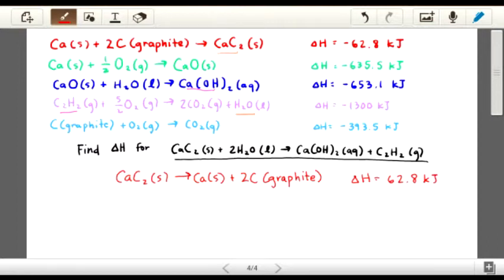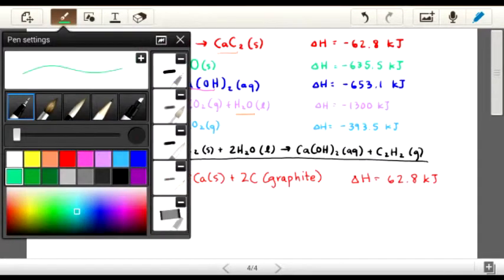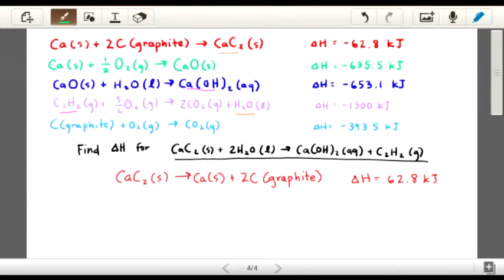And also, our second green equation won't be changed because the Ca on the left side will end up cancelling with the Ca on the right side of the modified red equation. So I will just copy it down without changing anything. And there is a fraction in front of the O2, but we're not going to change that yet. We're going to see if everything actually cancels out.